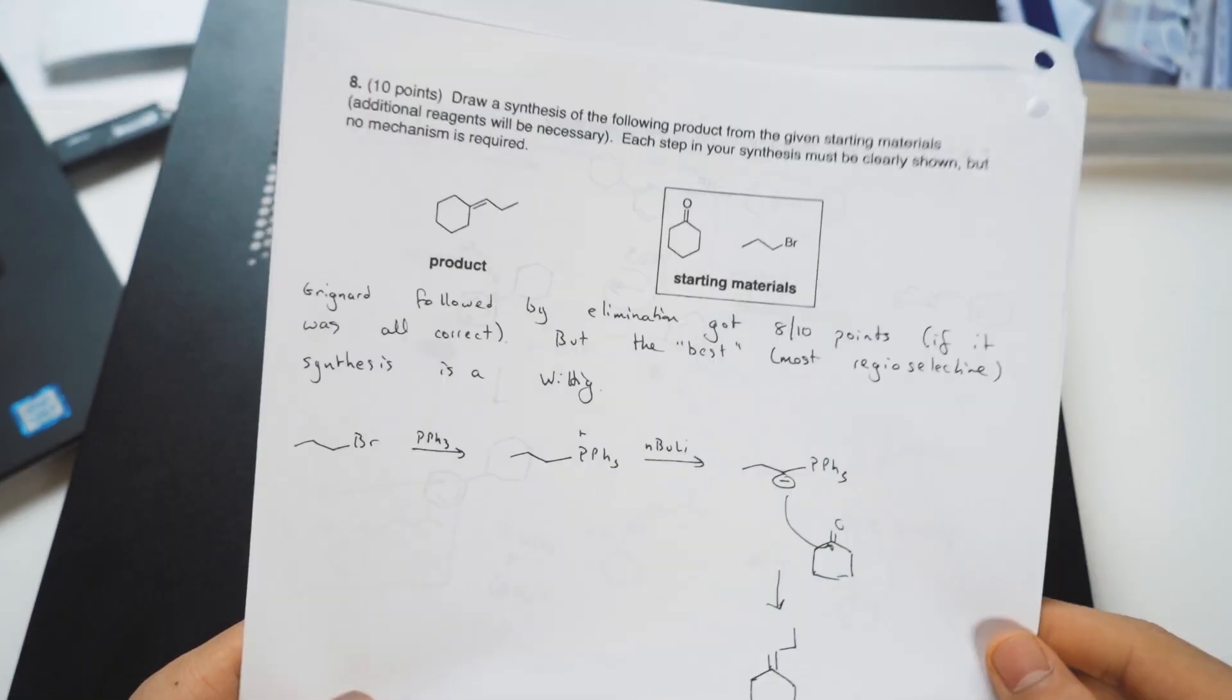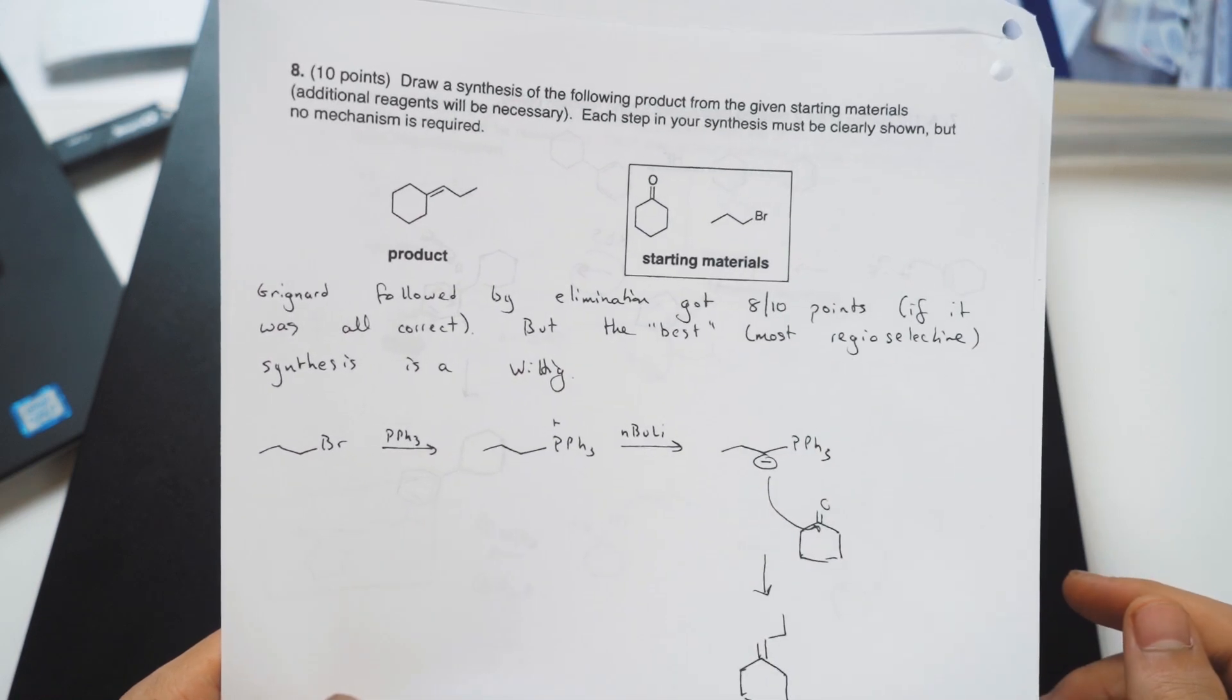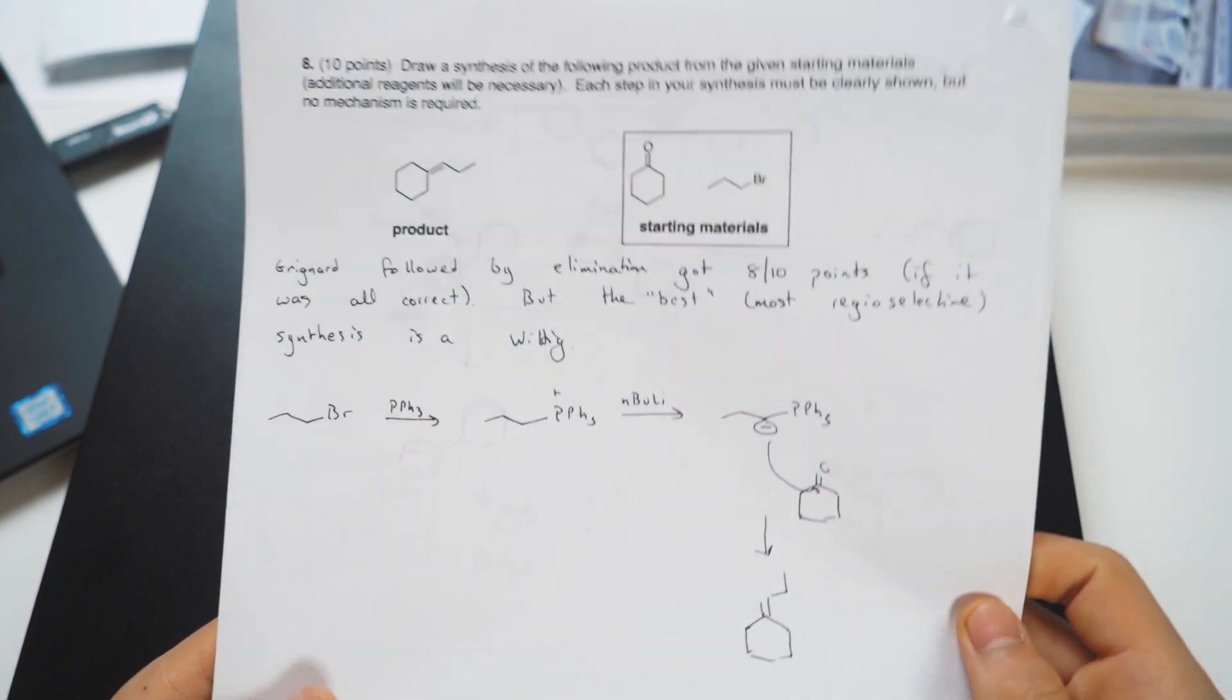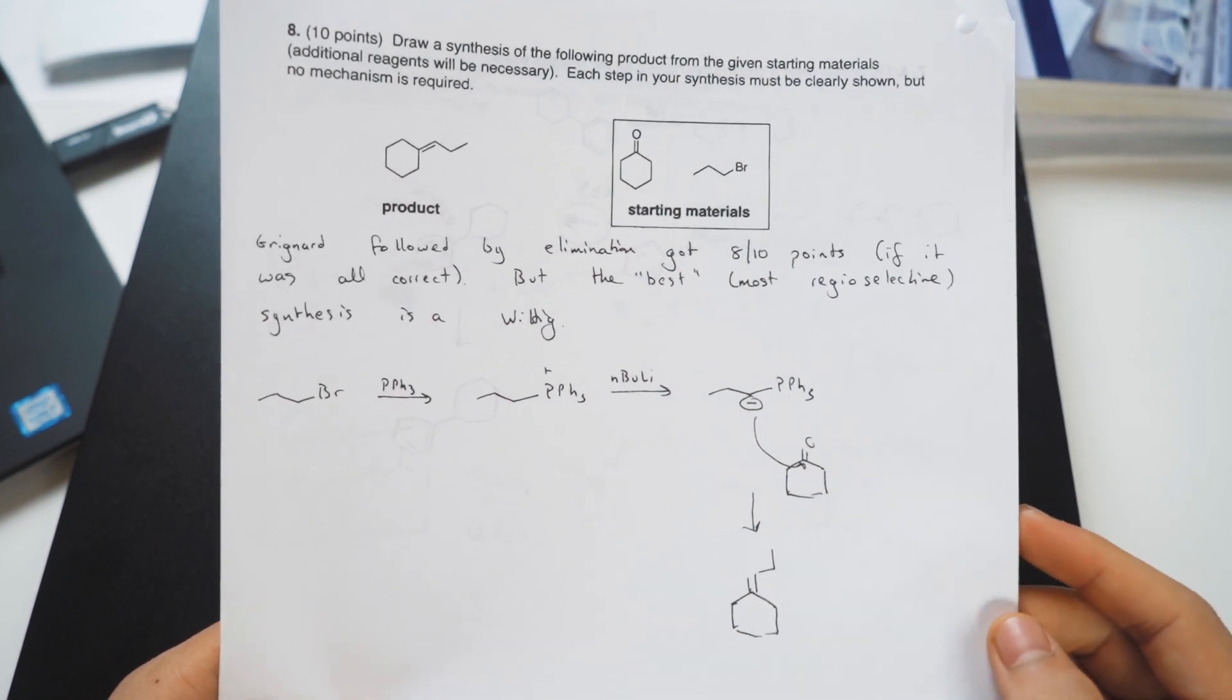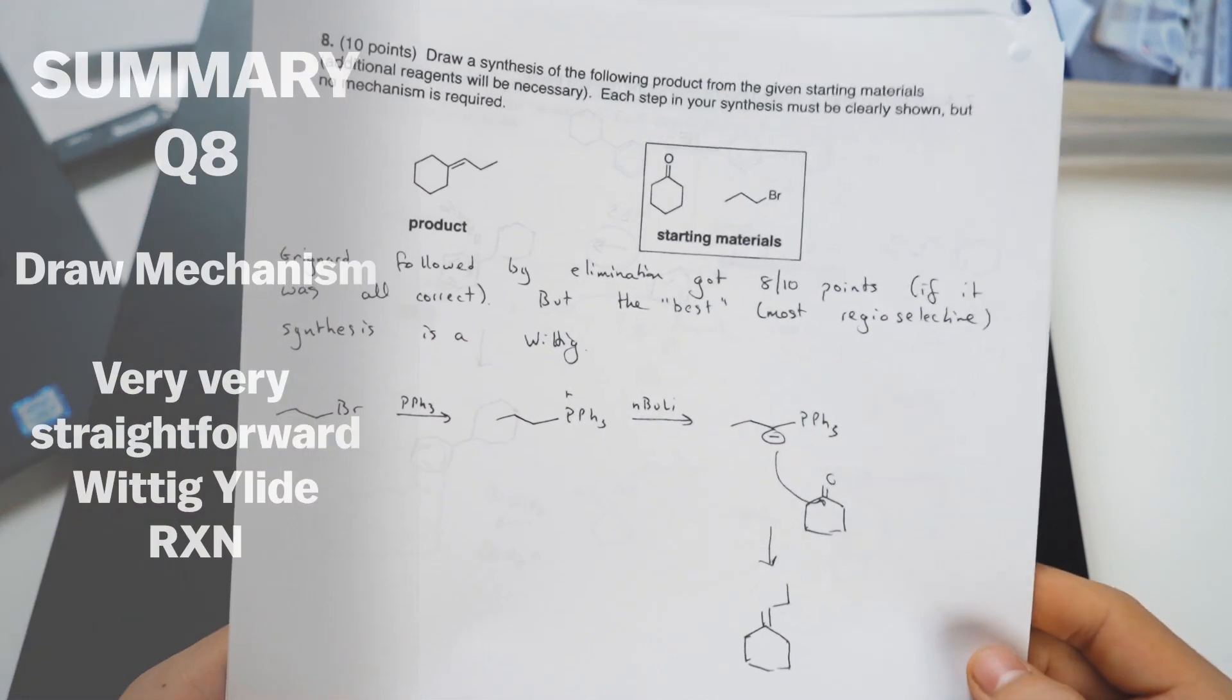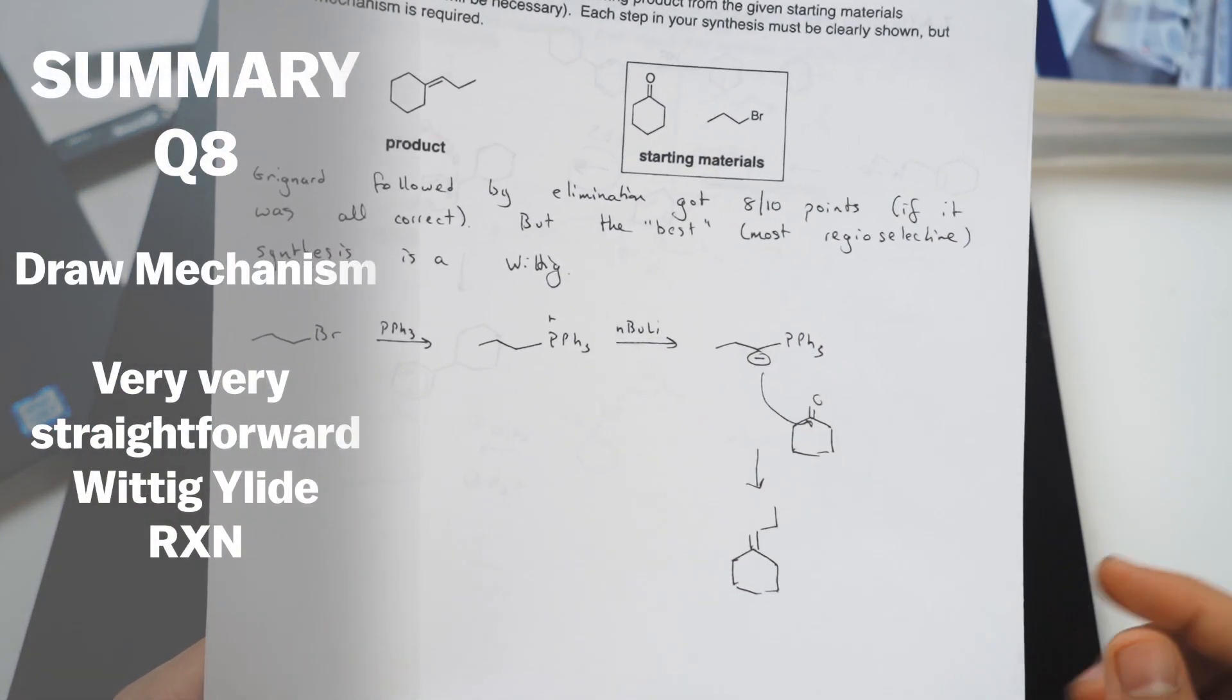This next mechanism, if you recognize that it's a Wittig-Illid reaction, which in this case is something we went over in Orgo 2 but pretty easy to recognize if you know the right pattern, well then the mechanism is not too tricky as you can see here.